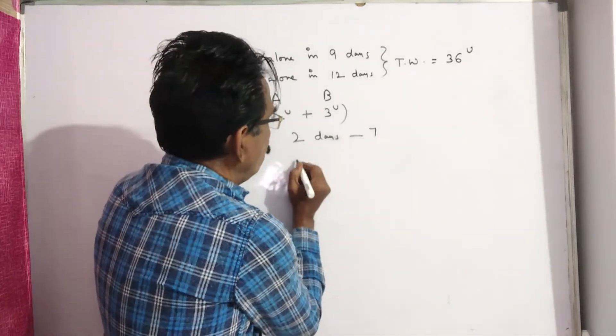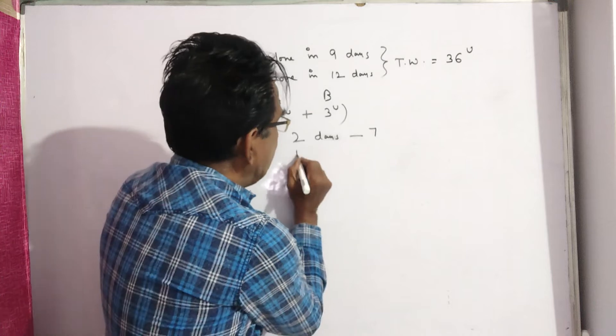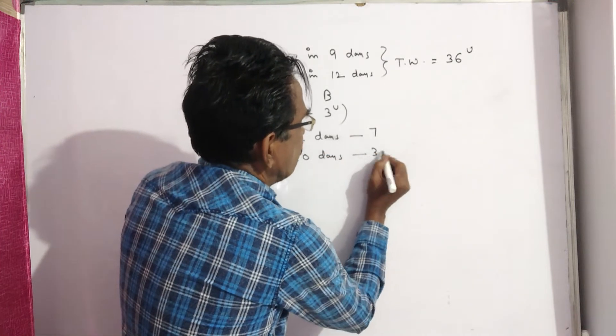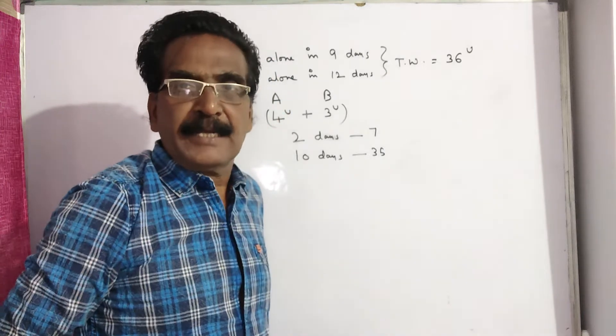Then, five into two, ten days. Five sevens, 35 units of work will be completed.